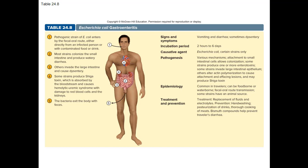The pathogenesis has various mechanisms: attachment to intestinal cells allows colonization. Some strains produce exotoxins; others invade intestinal epithelial cells. Some produce Shiga toxin; others cause thickening of the host cell membrane and loss of microvilli. That's why medical microbiological testing is needed to determine whether it's Shigella or E. coli. The epidemiology is very common in travelers and can be food or waterborne, with fecal-oral transmission and sometimes an animal source.